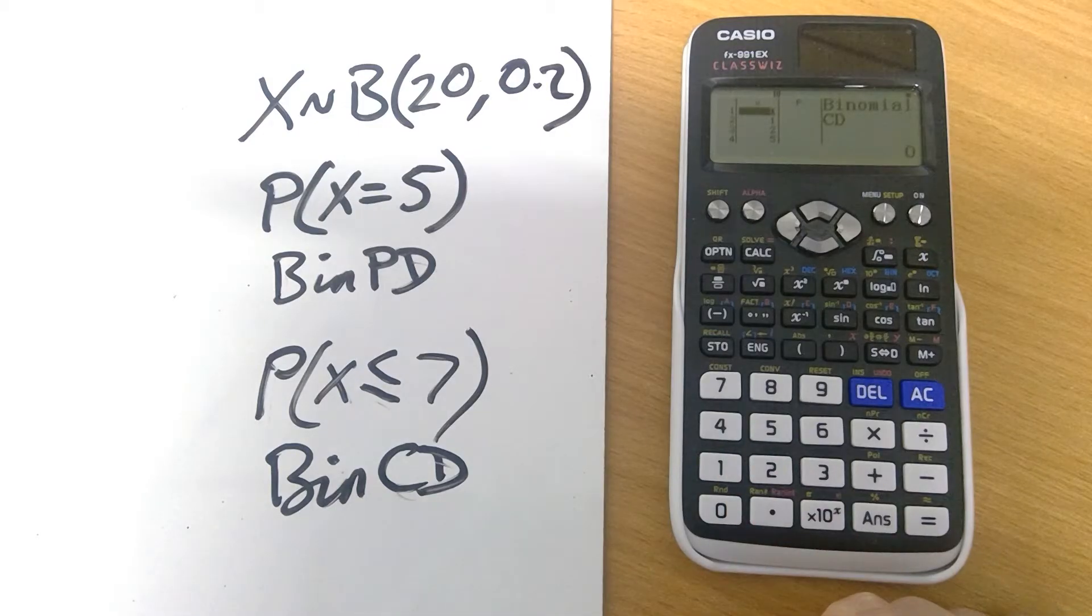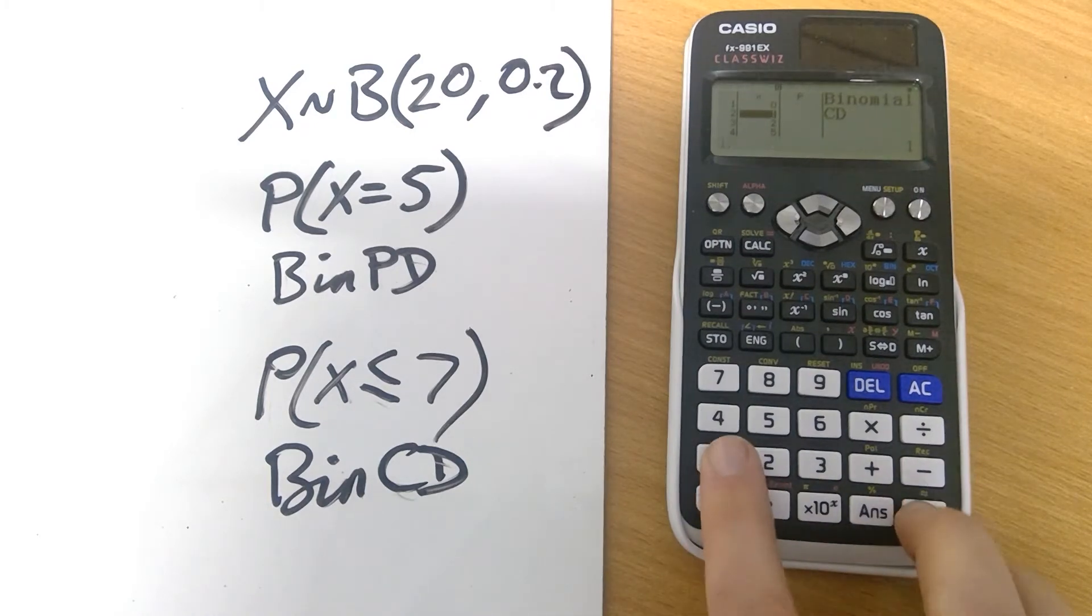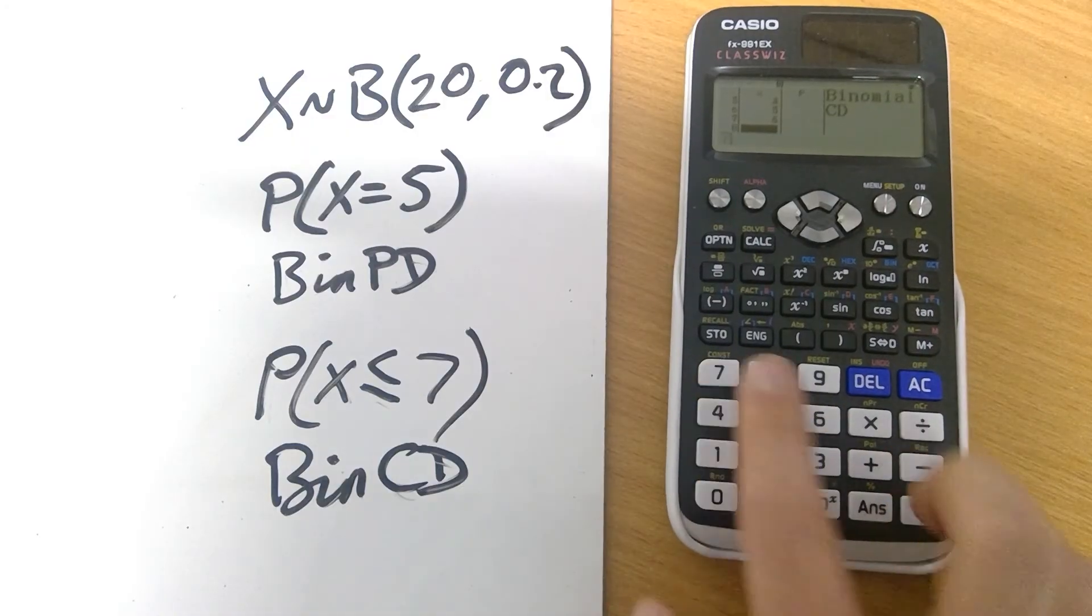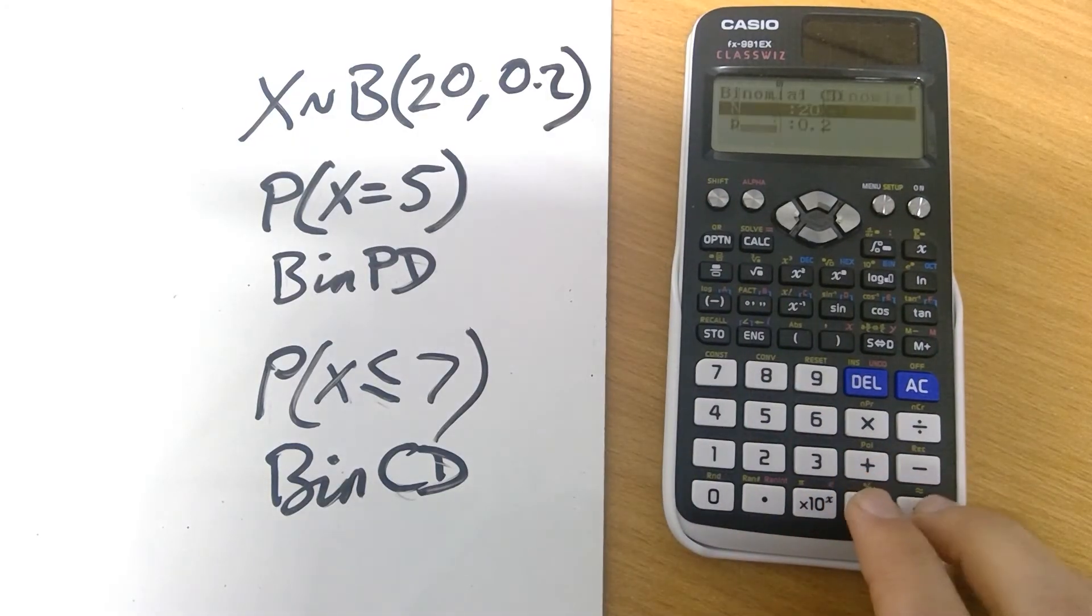So what you sensibly might want is all the values up to 7. So we'll go 0, 1, 2, 3, 4, 5, 6, 7. And it's going to ask us, are these the values of N and P that you want? Yes, they are. So simply pressing equals again.